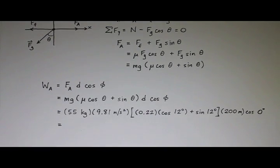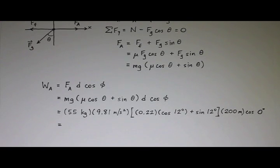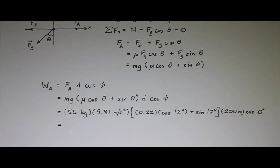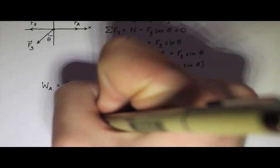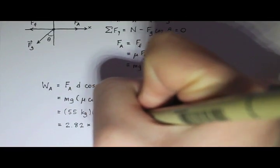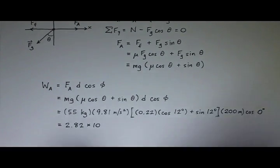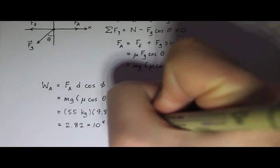Now I'm ready to plug this into the calculator. I get 55 times 9.81 times 0.22 times the cosine of 12 degrees — make sure you're in degree mode — plus the sine of 12 degrees, times 200. The cosine of 0 is 1, so I don't need to include that. The answer is 2.82 times 10 to the fourth joules.